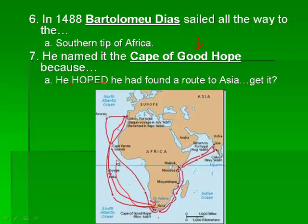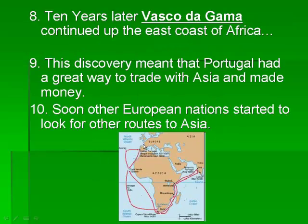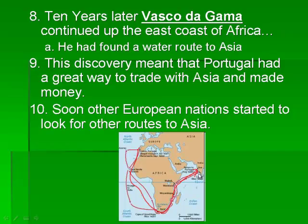Ten years later, Vasco da Gama continued up the east coast of Africa. He follows the same path, doesn't stop at the Cape of Good Hope, keeps going, and he found an all-water route to Asia by getting to India. This discovery meant that Portugal had a great way to trade with Asia and they started making money. And once again, when people start making money, other Europeans start getting jealous and they start looking for other routes to Asia.